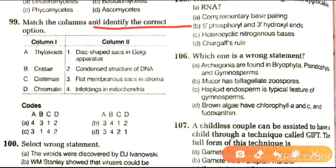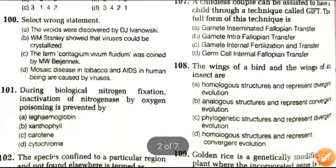Next question: match the column and identify the correct option. Thylakoids are flat membranous sacs with stroma. Cristae are mitochondrial infoldings. Cisternae are dish-shaped sacs found in Golgi apparatus. Chromatin is a condensed structure of DNA. The correct answer matches cristae with infoldings, giving option 3, 4, 1, 2. Our answer is 2, 1.